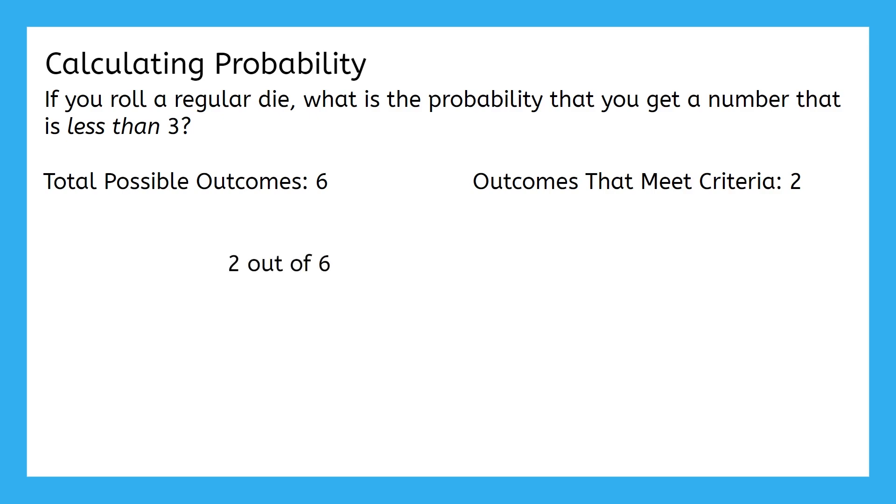Well, if 2 out of the 6 outcomes meet the criteria, we could just turn this into the fraction of 2 over 6. As always with fractions, we should simplify this to 1 third. You could also convert it to the decimal of approximately 0.33, or the percent of approximately 33%, but I prefer to leave it as a fraction just so that I don't have to do any extra calculations.